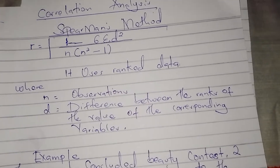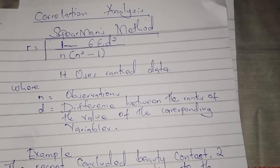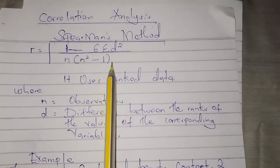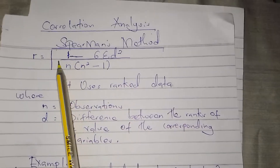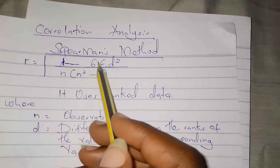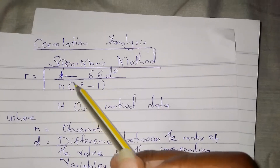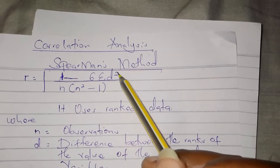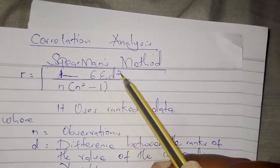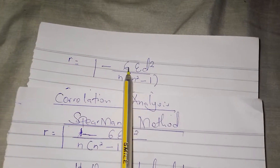We are continuing with correlation analysis. In this video we are going to see how to determine the relationship between variables using Spearman's method. This is the formula we use: r is equal to 1 minus 6 summation d squared, out of n in brackets n squared minus 1, whereby d represents the difference between the ranks and n is the number of items.